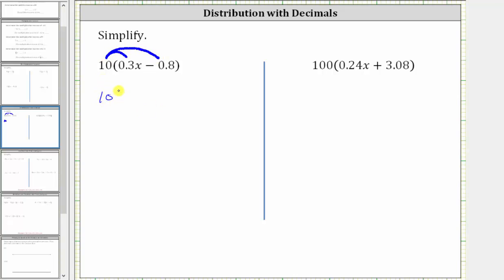The first product is 10 times 0.3x, and then we have minus 10 times 0.8. The shortcut for multiplying by 10 is to move the decimal point one place to the right,